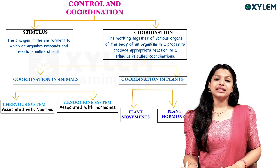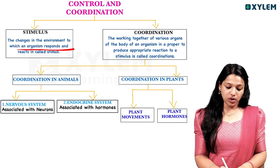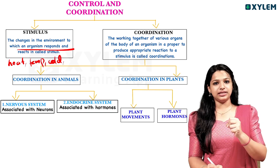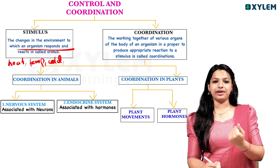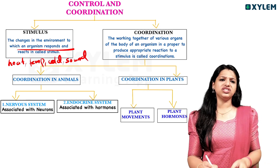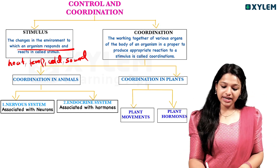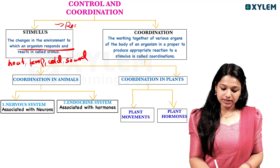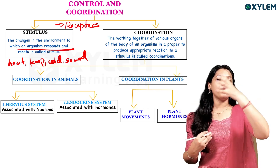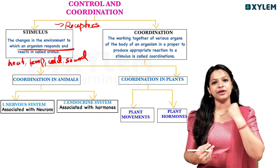What is Stimuli? The changes in the environment to which an organism responds and reacts is called Stimulus — for example, heat, temperature, cold. What are the factors that our body reacts to? Sound, heat, and temperature — these are stimuli. That's why we have receptors. What are the receptors? We have different sense organs like eye, nose, skin, tongue, etc. We have all the receptors in the same sense organ that we receive.